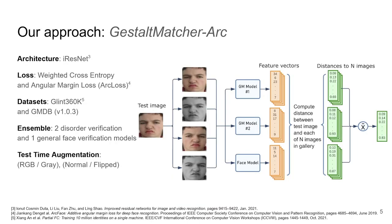In our approach, we chose to update most of the outdated methods used in GestaltMatcher. First, we decided to use an approach similar to ArcFace, using an updated architecture and contrastive loss. Next, we replaced the transfer learning face recognition dataset with a much larger and more diverse one, GLIN-360K. And lastly, we improved the robustness of the predictions using test-time augmentation and a model ensemble that combines fine-tuned disorder features with general face features.